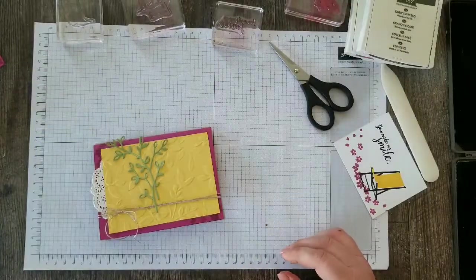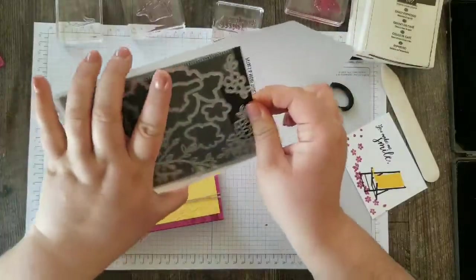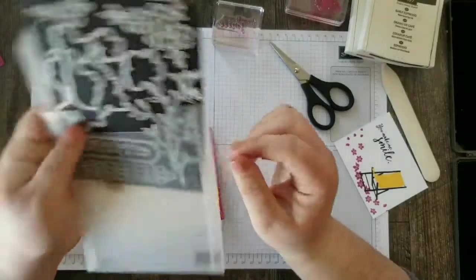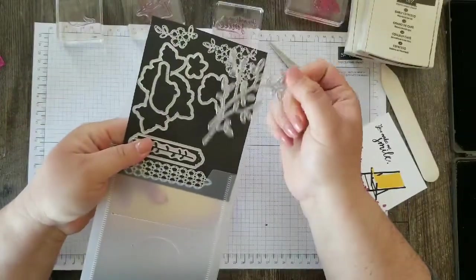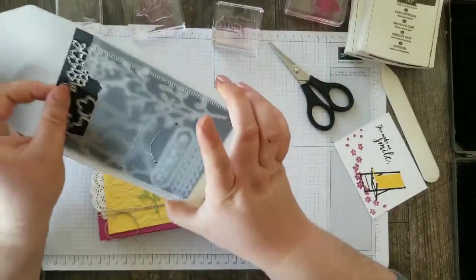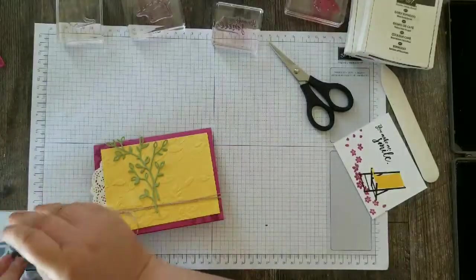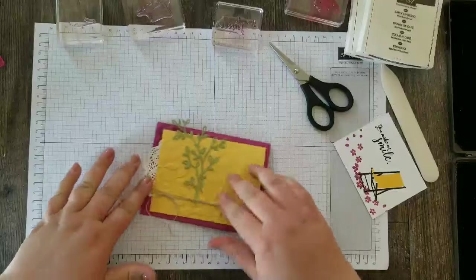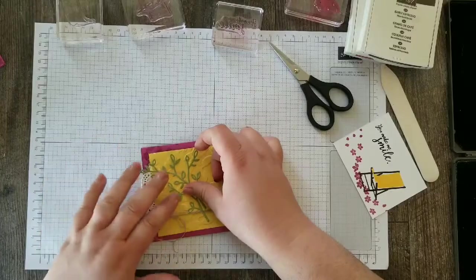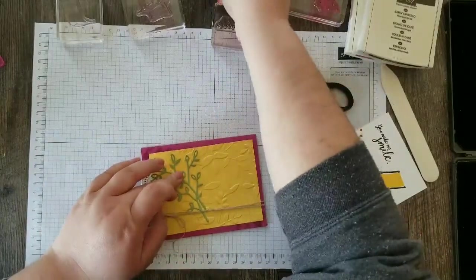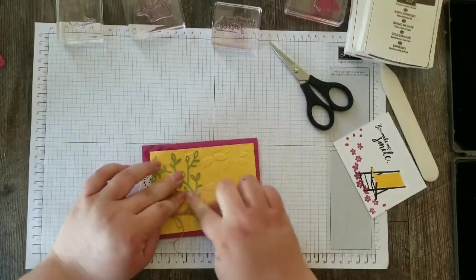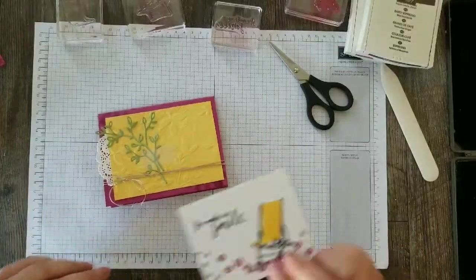Next I die cut, I think you would call this like a stem and leaves from our Petals and More Thinlit Dies. So I used this die here and I cut that piece out in Pear Pizazz because being a bright springy card, I needed just a pop of green in there. And what I'm going to do is just slide that, it's going to go under our layer and I'm just going to tape it down. No one's going to see that tape because we're going to have a layer on top of that.